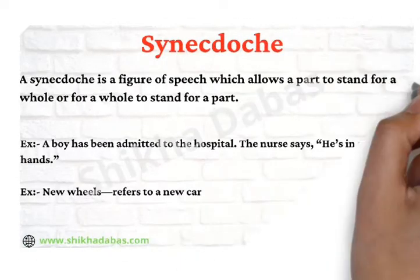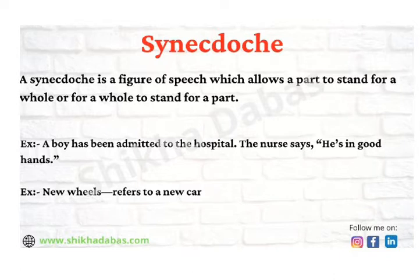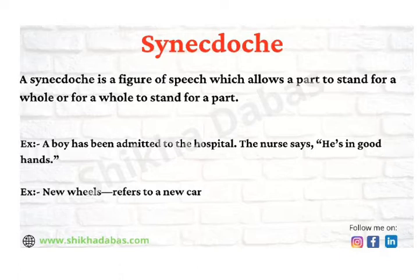The next literary device is synecdoche. It is a figure of speech which allows a part to stand for a whole or a whole to stand for a part. For example, when a nurse says 'he is in good hands,' 'good hands' refers to the doctors treating the patient. In Charles Dickens' Hard Times, mill workers are referred to as 'hands.' Another example: saying 'look at my new set of wheels' when referring to a new car.